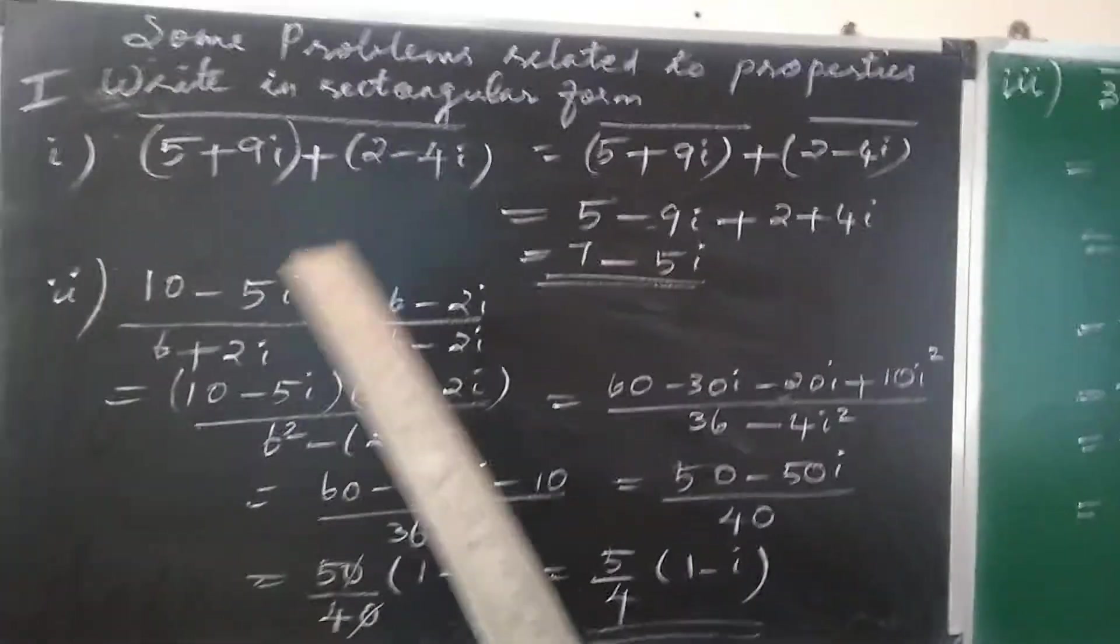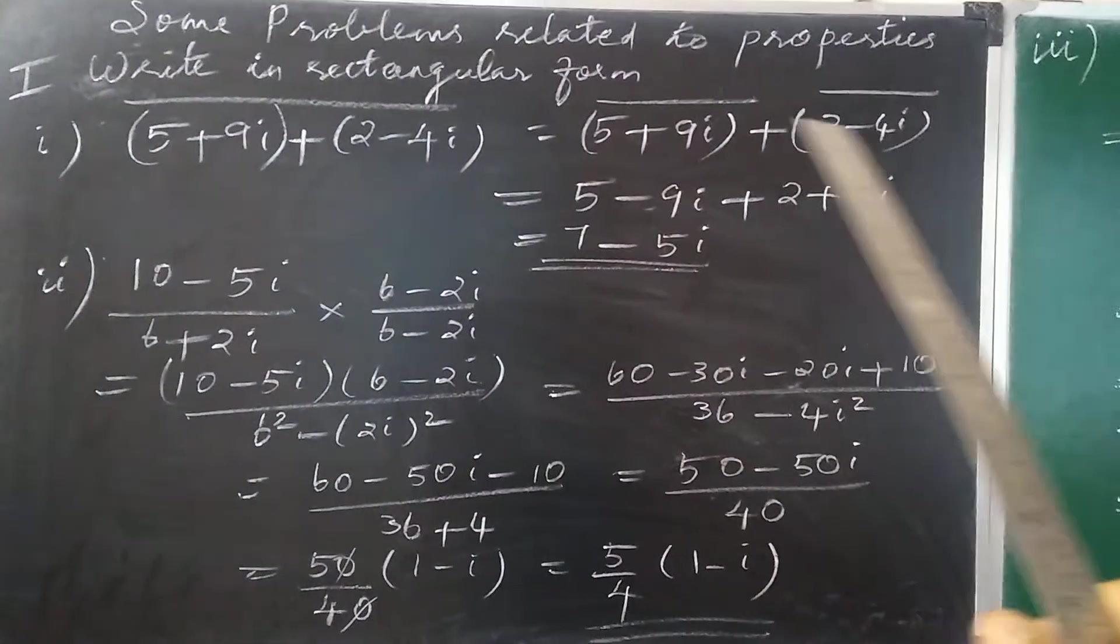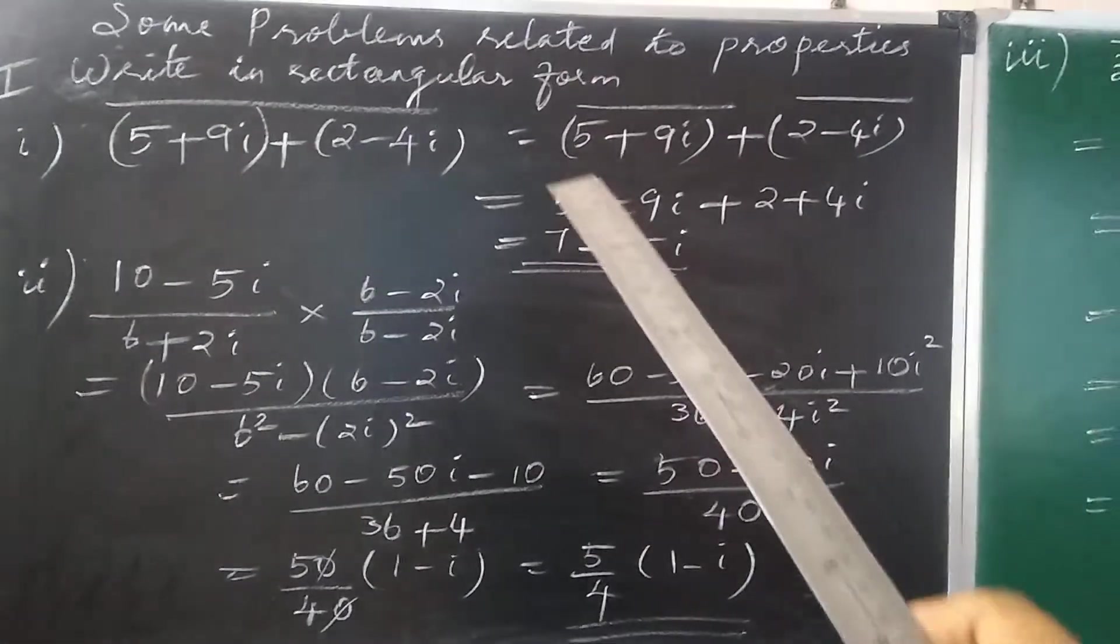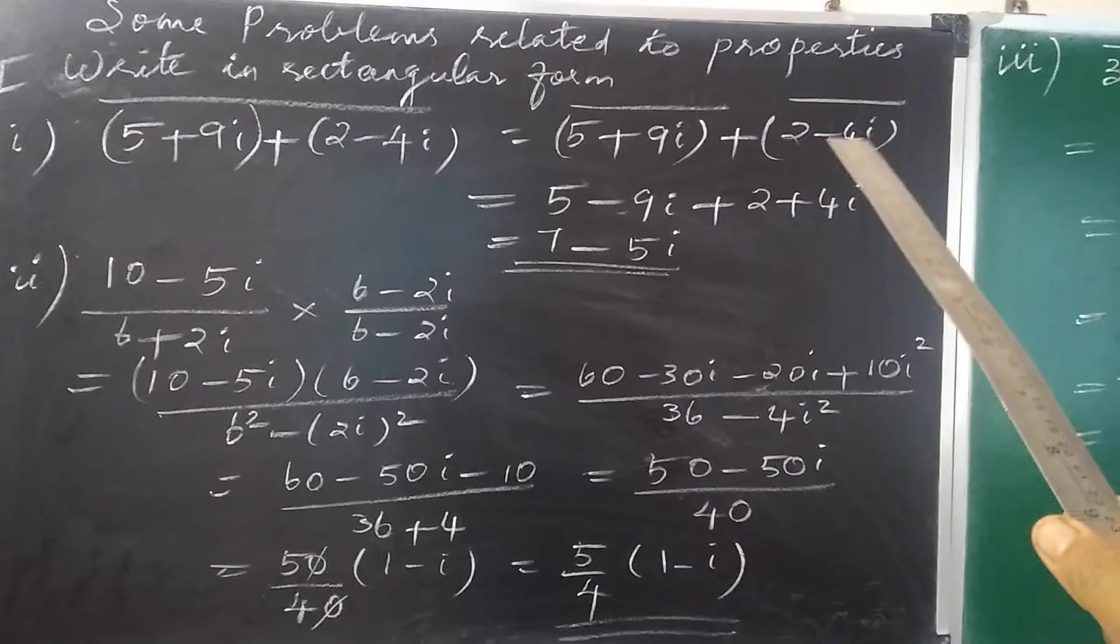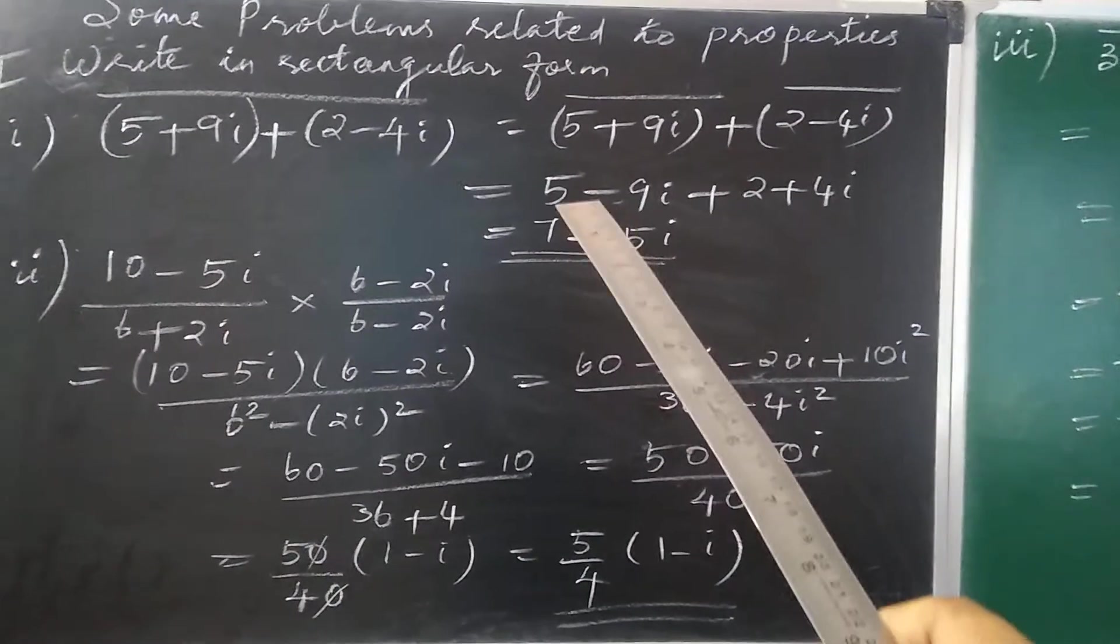Conjugate of the sum can also be calculated as sum of the individual conjugates. So I am taking conjugate of the first one, then plus conjugate of the second one.